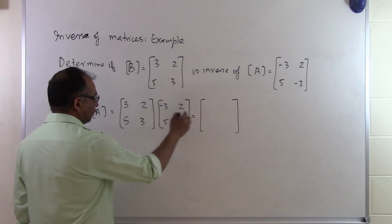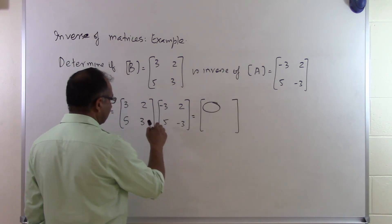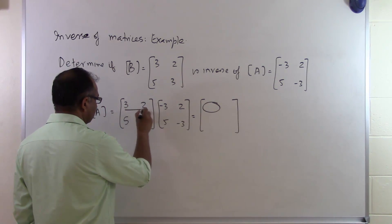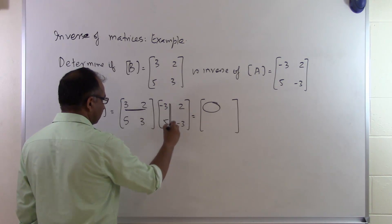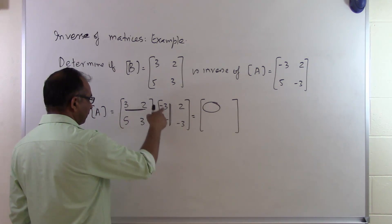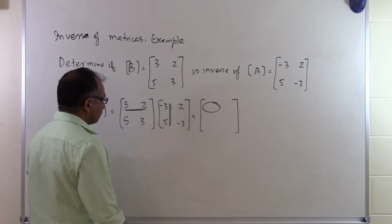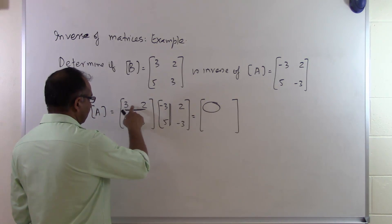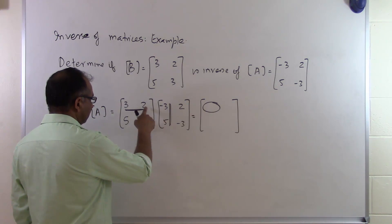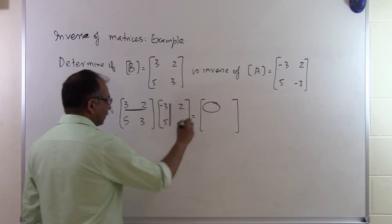In order to find out this element, I will take this row and multiply it by this column. So first row multiplied by the first column gives the resulting matrix. It's 3 times minus 3 is minus 9, 2 times 5 is plus 10, so I get a 1 here.